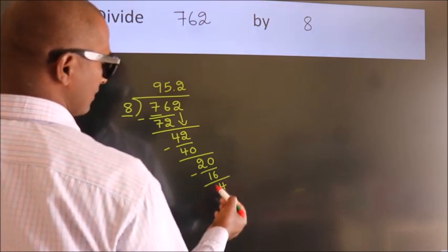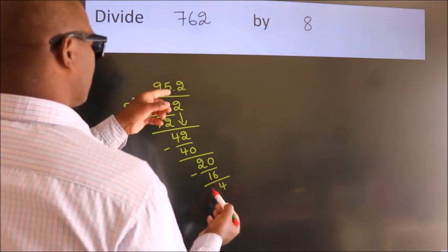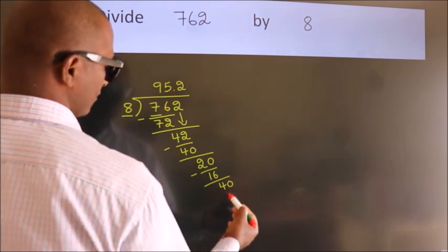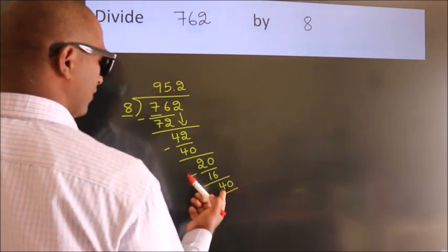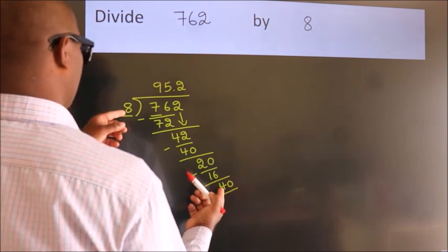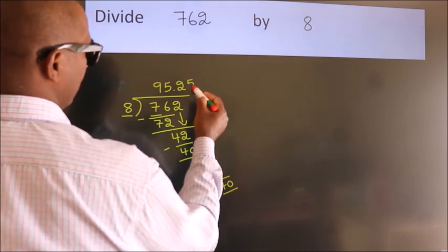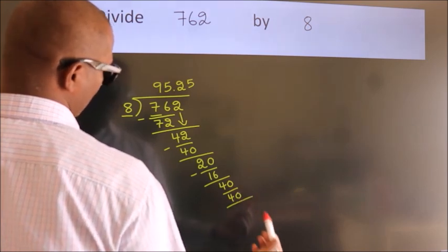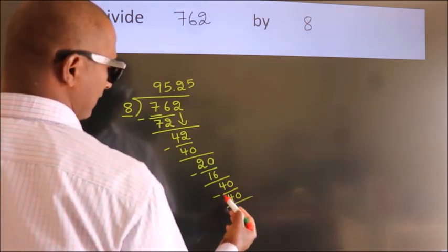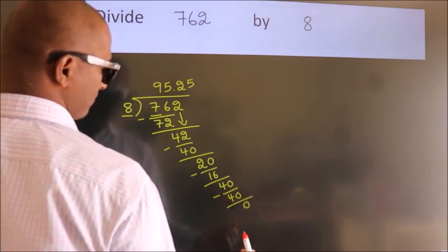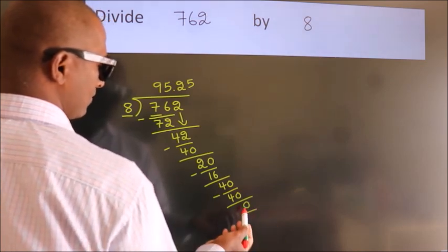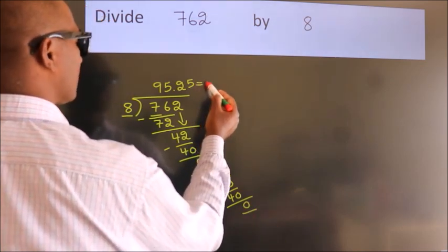After this, we already have the decimal, so directly take 0. So 40. When do we get 40? In the 8 table, 8 fives is 40. Now we subtract. We get 0. Here, we got remainder 0. So this is our quotient.